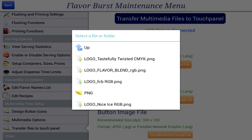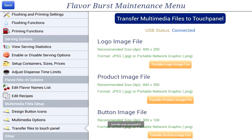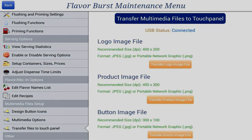All the different file types are transferred in this same way. You have now successfully transferred videos and images to your color touch panel. The videos and images are now categorized in their respective folders on the touch panel, and you can now choose to display those pictures or images from the multimedia options menu. Watch the multimedia options tutorial to learn more.